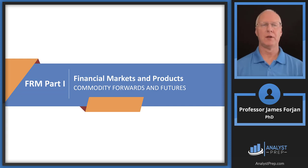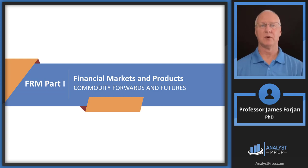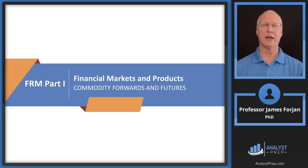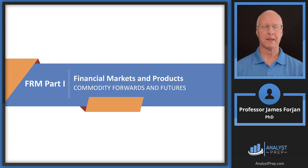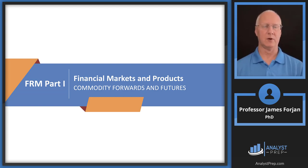Hey, it's Jim and this is FRM Part 1, the topic on financial markets and products and the chapter on commodity forwards and futures. This is the final chapter in a series on forward and futures contracts. Our focus has mostly been on financial forward and futures contracts. That first paragraph tells us that because futures contracts are standardized forward contracts, this chapter treats those two terms interchangeably. The emphasis in this chapter can be summarized in one word: the difference between financial and commodity forward and futures contracts.